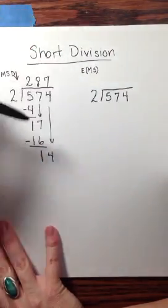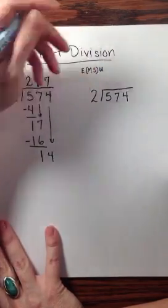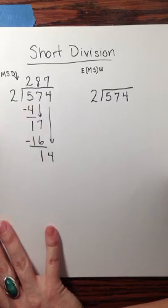and then you bring that remainder, that 1 that's left over, up next to the next digit instead of bringing that digit down. So that's going to look like this.